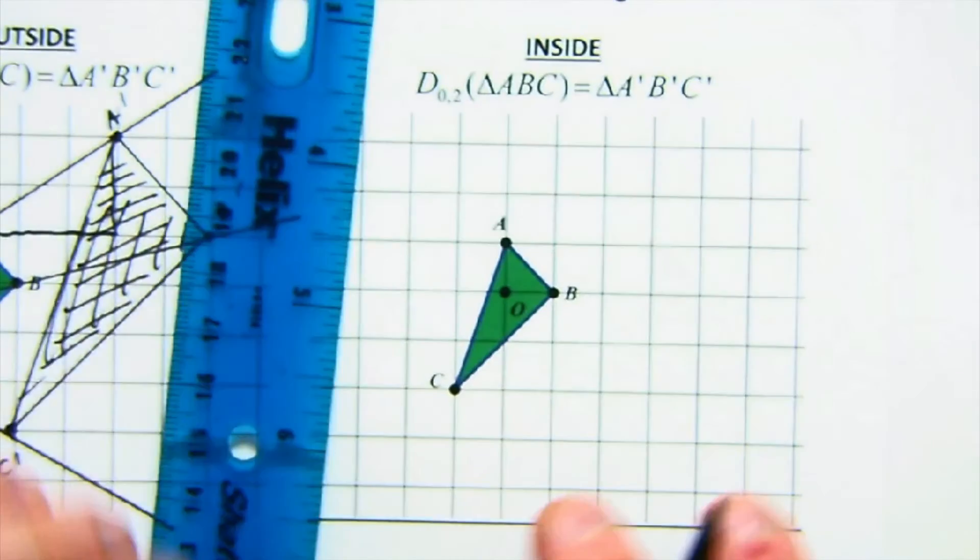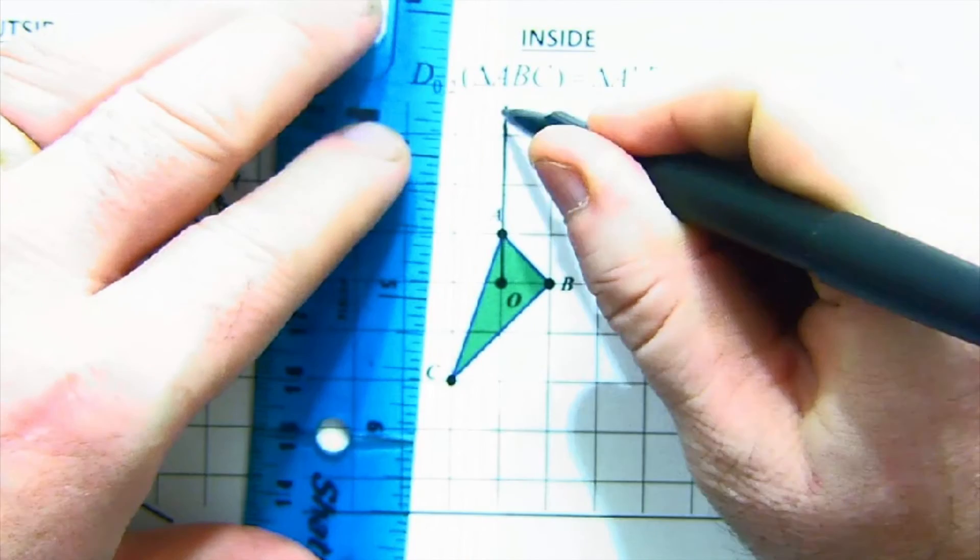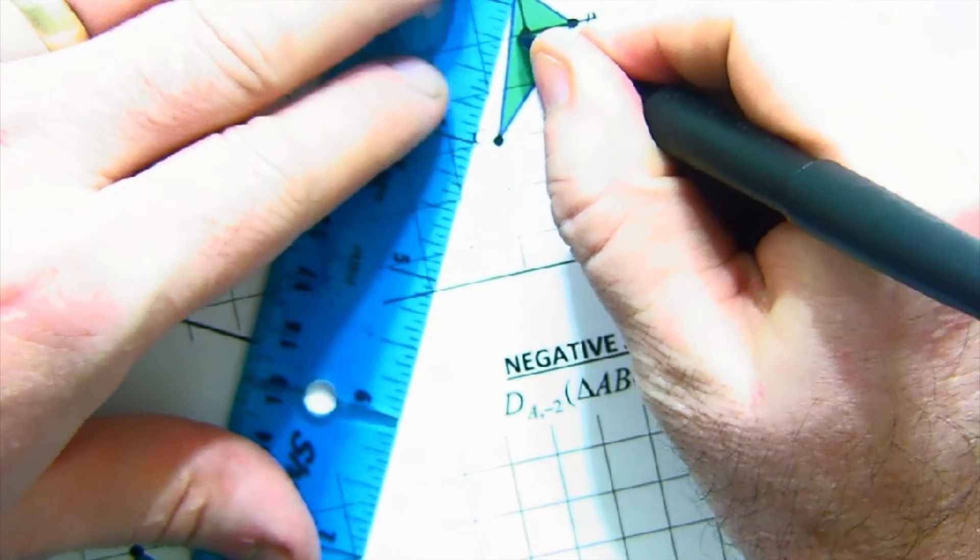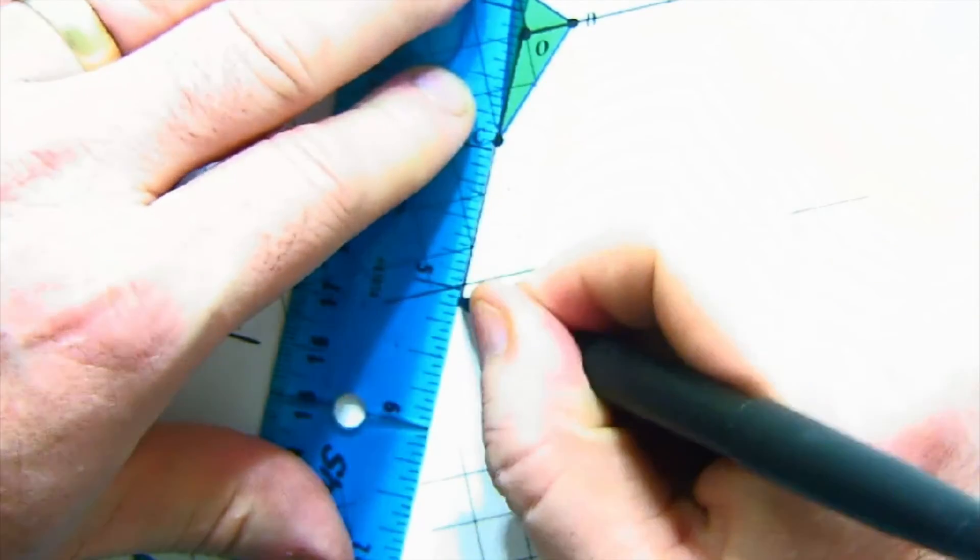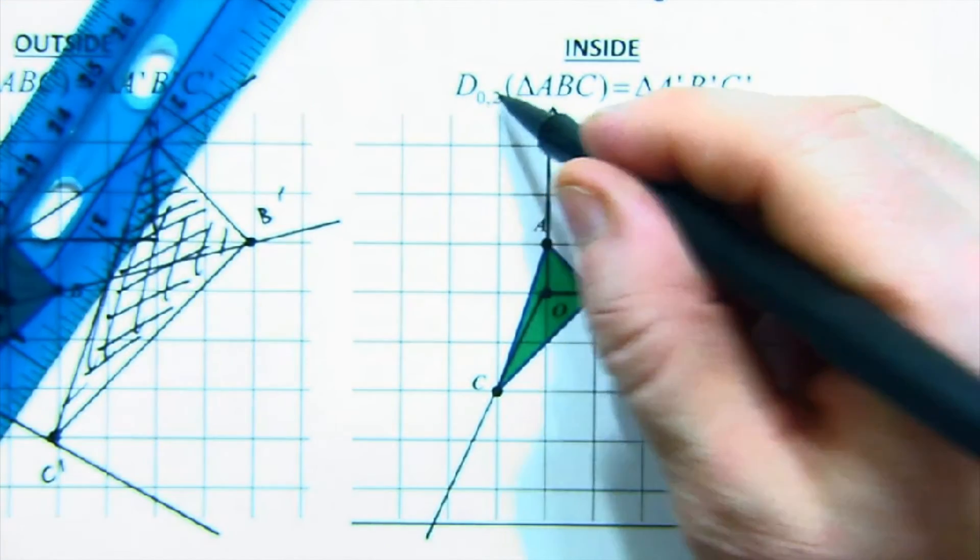That's the center outside. The center could even be inside, which I think, for me, creates kind of a cool little diagram. The same thing you're going to do. You're going to just send the rays out from the center through each of the vertices of your triangle and follow the same pattern. This is a dilation of two as well.